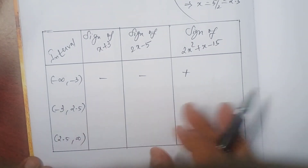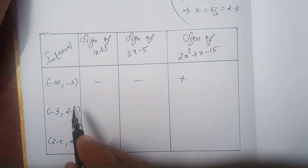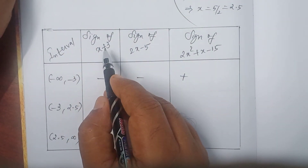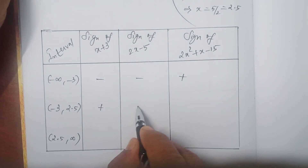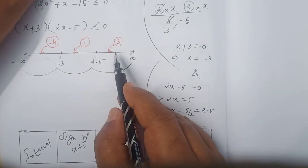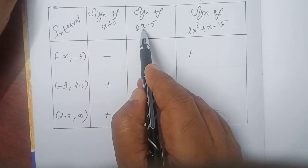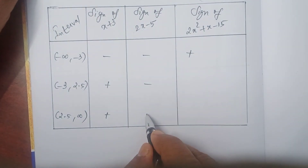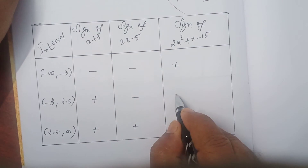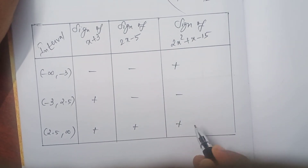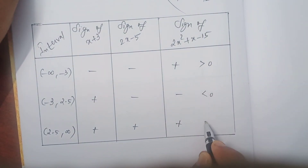Next, substitute x equals 1. 1 plus 3 equals 4, which is positive. 2 into 1 minus 5 equals minus 3, which is negative. For the last interval, substitute x equals 3: 3 plus 3 equals 6, positive. 2 into 3 minus 5 equals 1, also positive. So: positive times negative is negative, and positive times positive is positive. Negative means less than 0; positive means greater than 0.